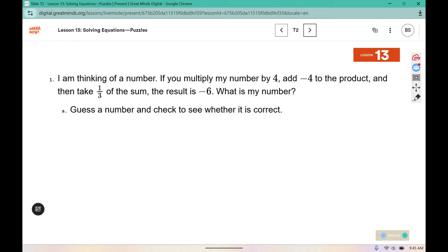I am thinking of a number. If you multiply my number by 4, add negative 4 to the product, and then take one third of the sum, the result is negative 6. What is my number? First, we're going to guess a number and check to see whether it is correct.